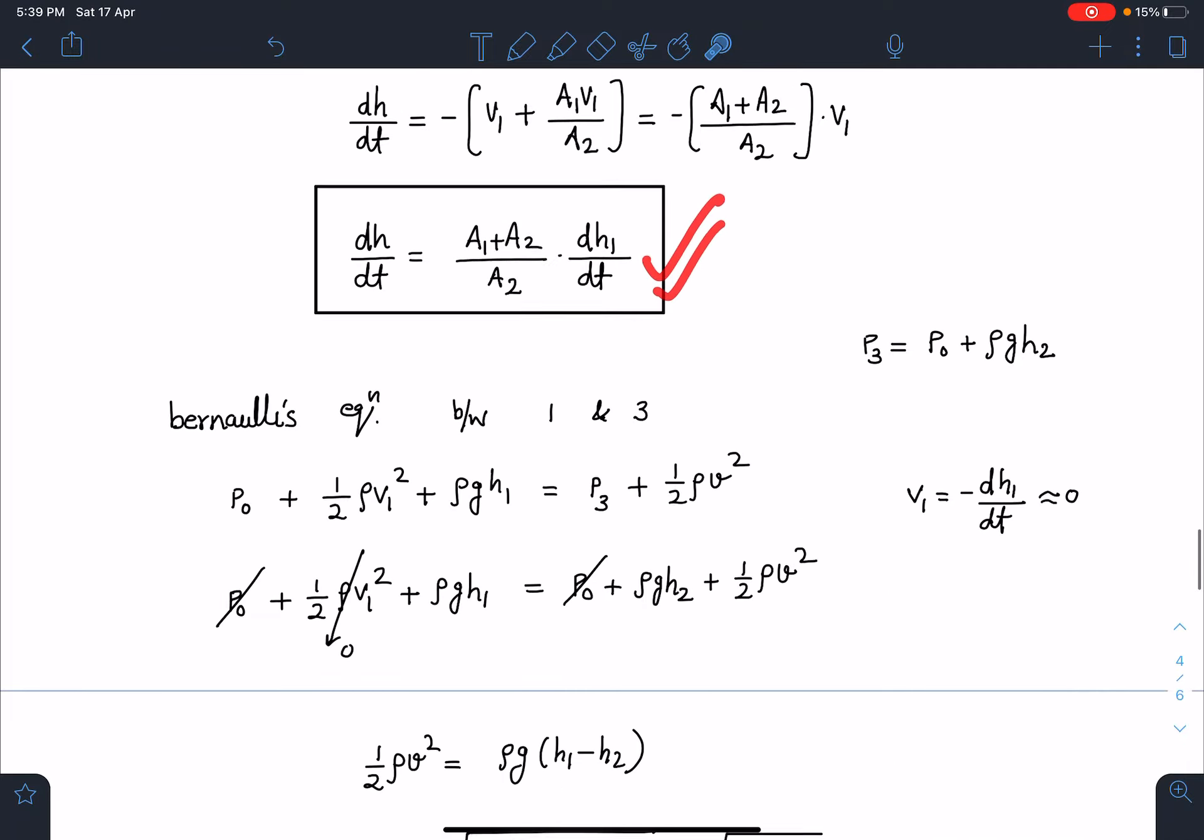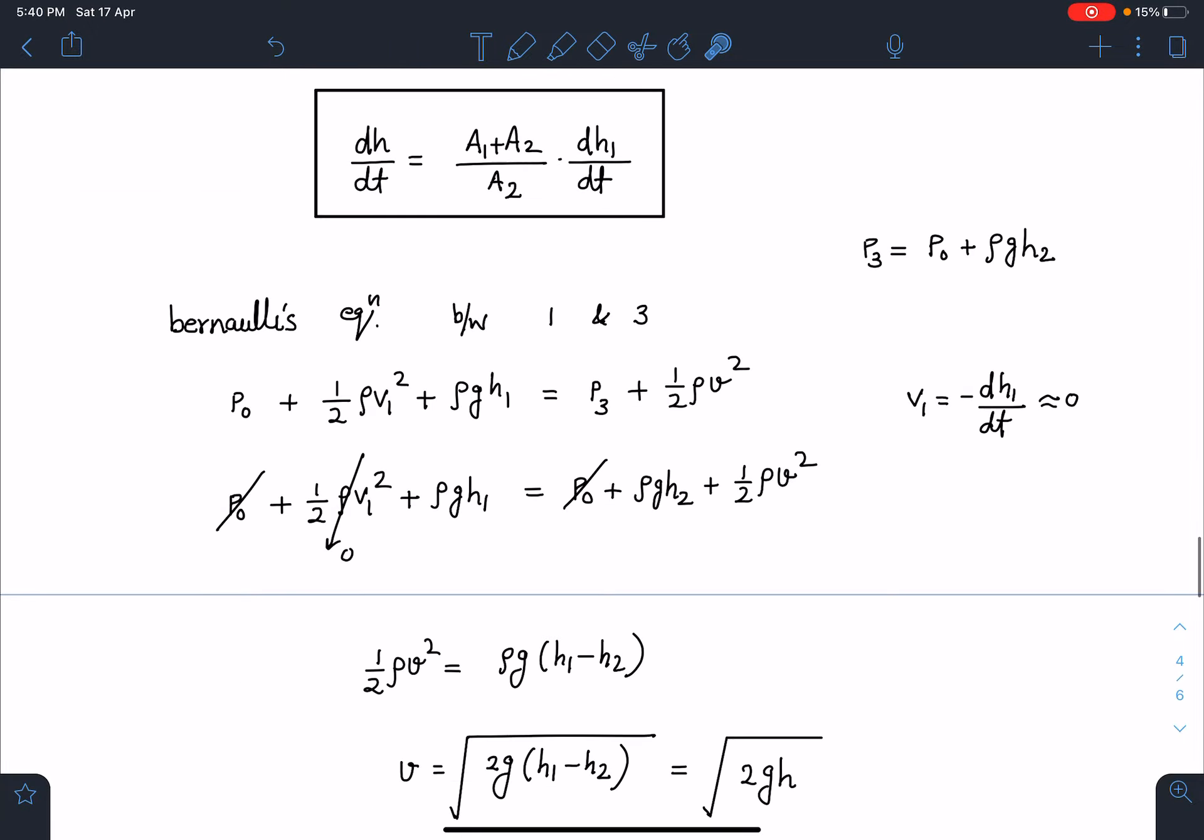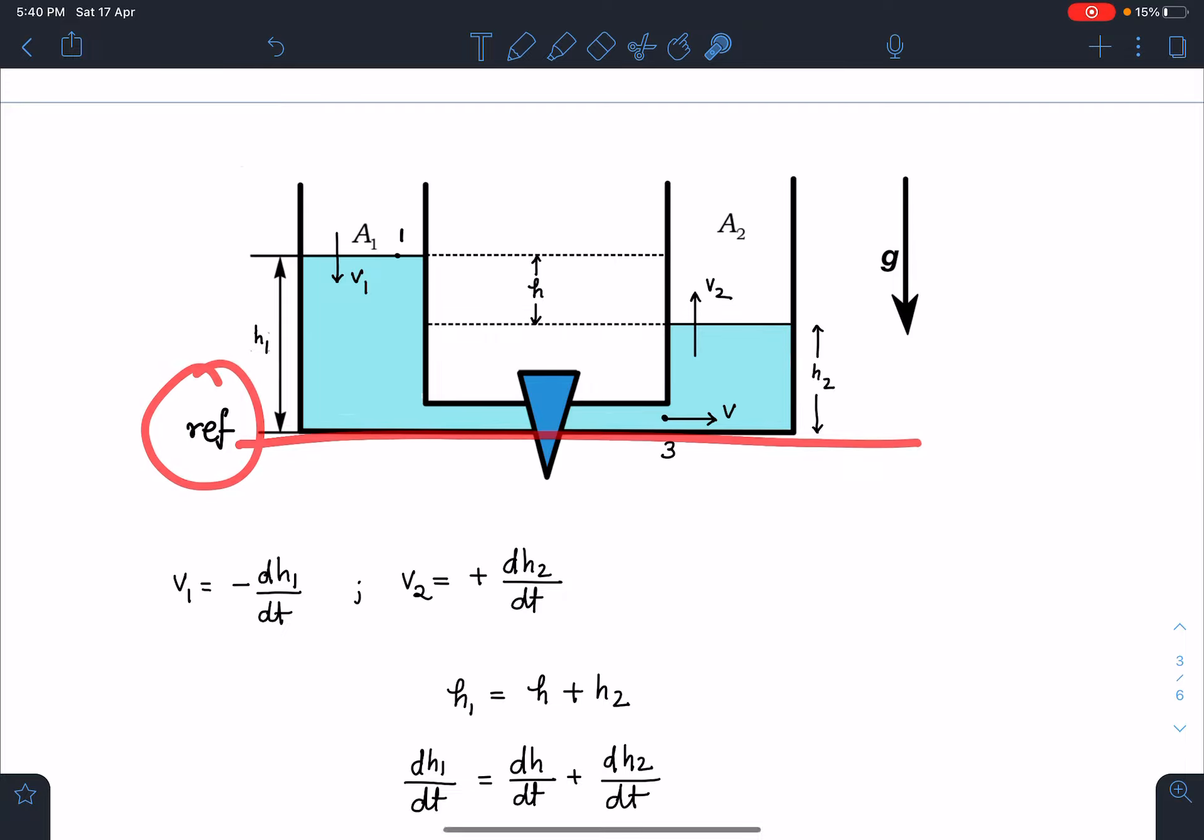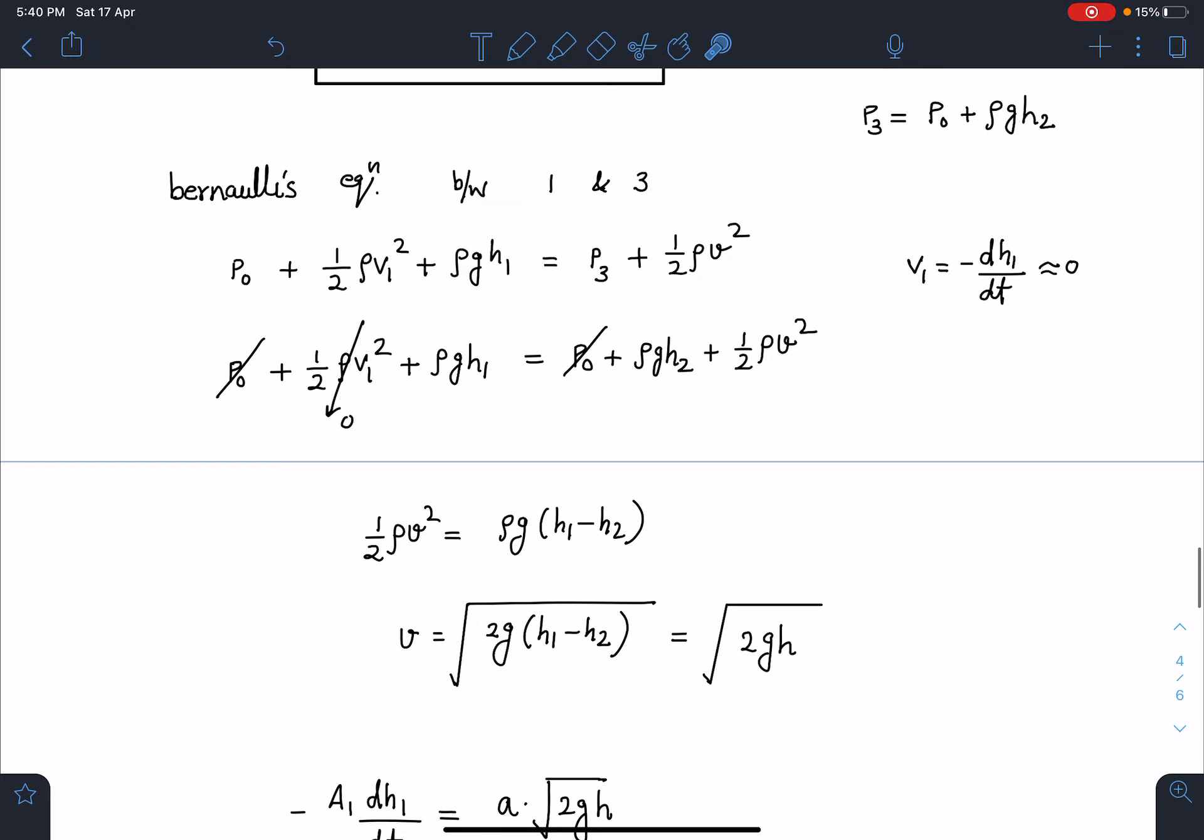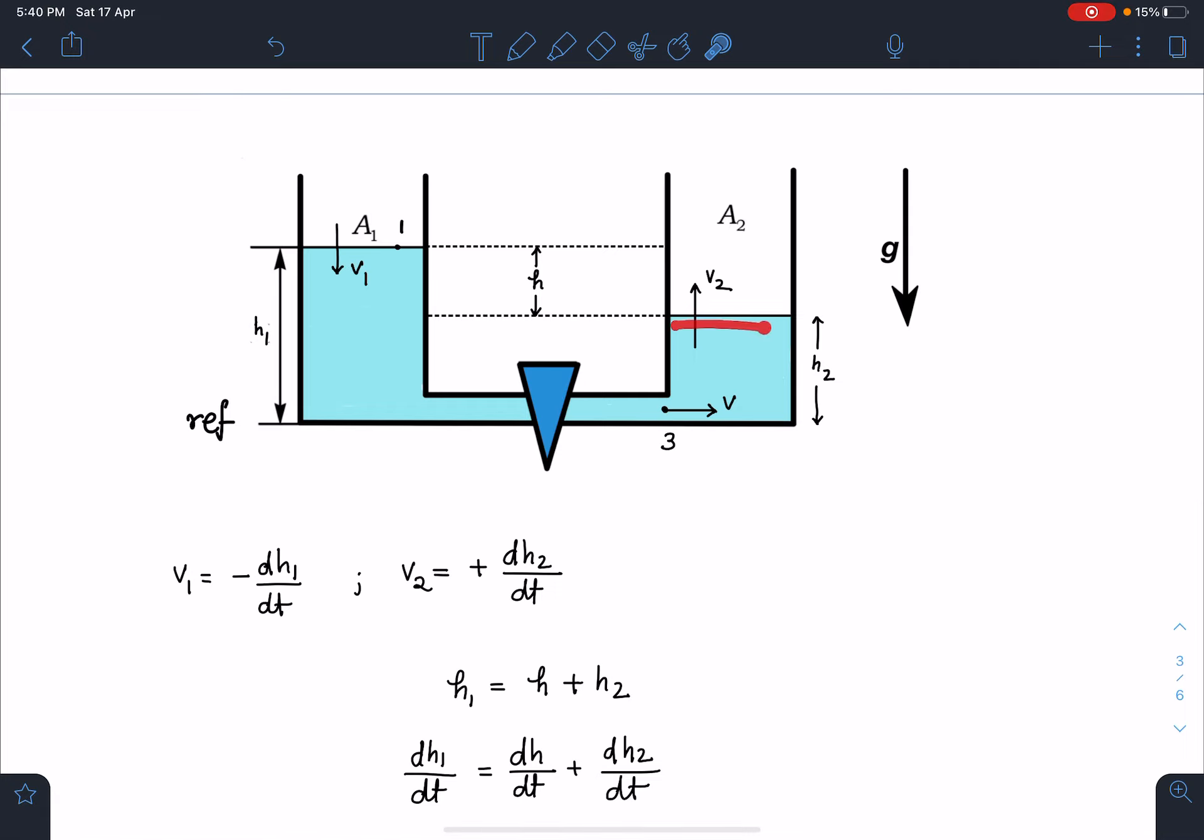Now I can apply Bernoulli's equation between point 1 and 3. Since these areas are very large, I can assume this liquid is almost stationary. If this liquid is almost stationary, I can write here the overall energy at this point and overall energy at this point. So you can see here: p0 + ½ρv1² + ρgh1, and reference I have taken at this point itself, the lower level of the vessels. So energy at 3 will become p3 + ½ρv².